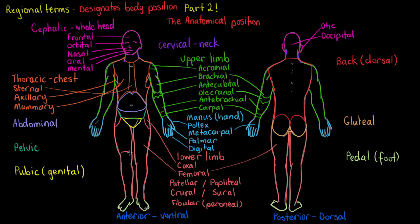The patella is the name of the knee bone, and we call that region just the patella region. The popliteal is the name we use for the posterior aspect — so the back of the knee. Crural and sural are the names for the anterior and posterior aspects of the lower leg. The fibular region is named after the fibular bone and runs along that aspect of the fibular bone.